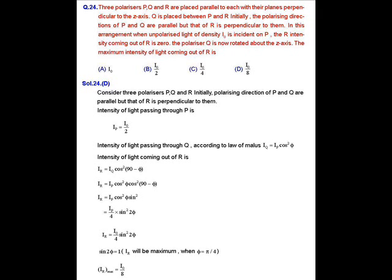Question 24. In this question, three polarizers P, Q, and R are placed parallel to each other with their planes perpendicular to the z-axis. Q is placed between P and R. Initially, the polarizing direction of P and Q are parallel, but that of R is perpendicular to them. In this arrangement, when unpolarized light of intensity I₀ is incident on P, the intensity coming out of R is zero.